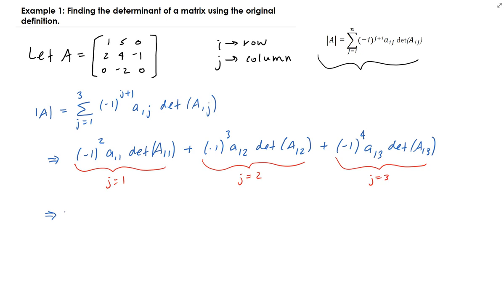Starting with J equals 1: minus 1 squared gives you 1. A11 refers to this position — that's going to be positive 1. And we're going to multiply it by the determinant of A11. To find that, we cover up the corresponding row and this corresponding column, and that leaves you with the submatrix whose determinant we need.